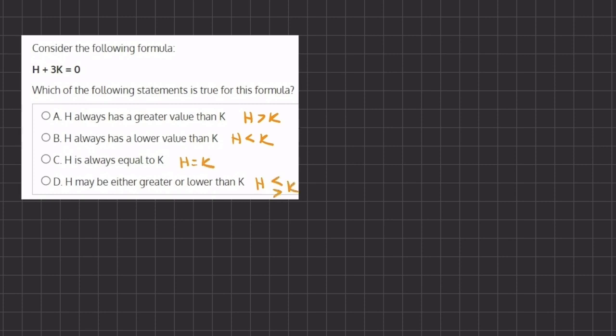Alright, so now let's take a look at our formula here. And if we want to see what H equals, we can subtract negative 3K on both sides. So our H equals negative 3K.